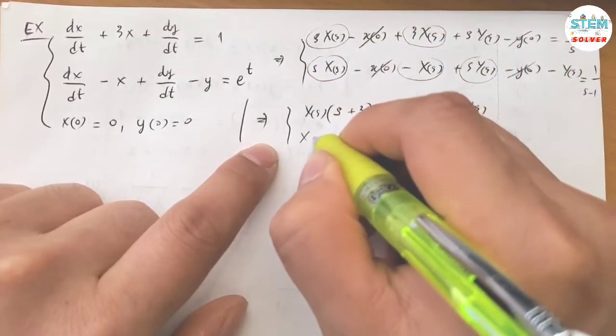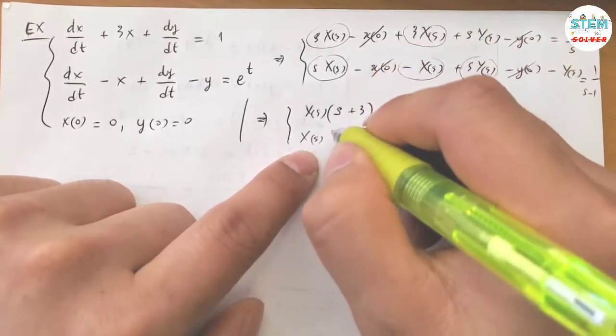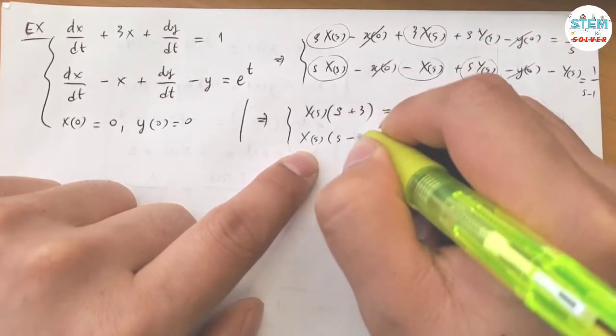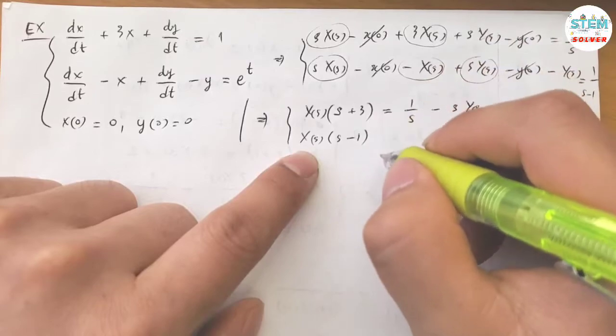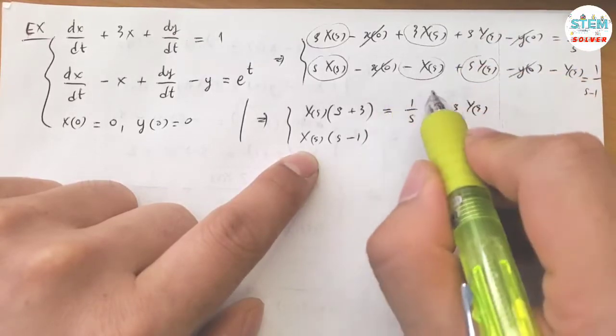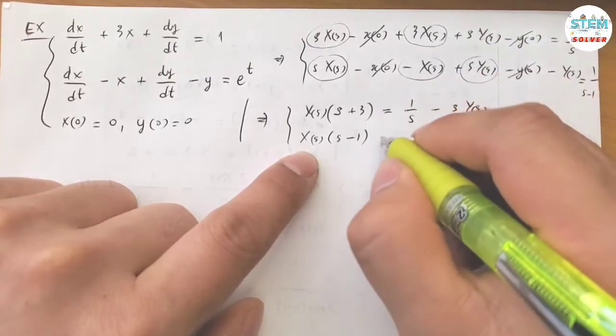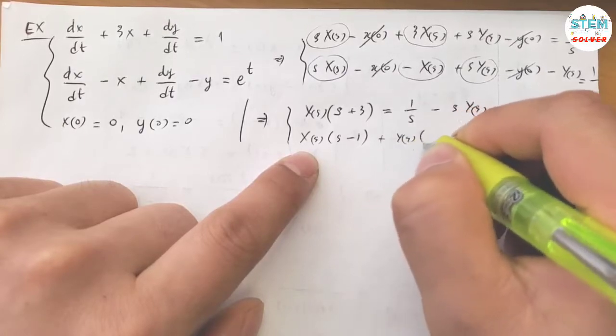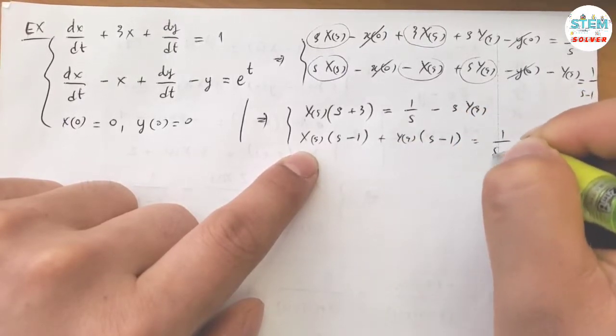Factor out capital X(S), I have S minus 1. I have S minus 1. And for this one, factor out capital Y(S). I have S minus 1 equals 1 over S minus 1.